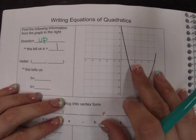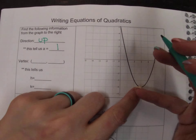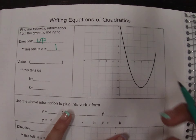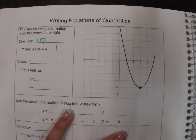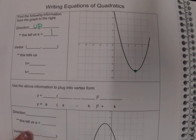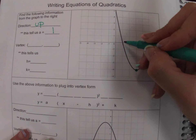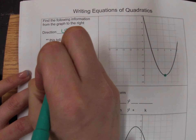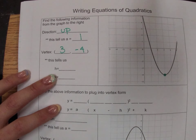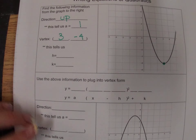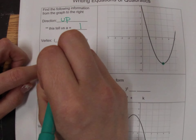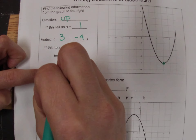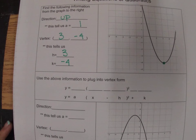We're going to find the vertex of this parabola. Remember, the vertex is the high point or the low point. In this parabola, it is a low point, and we're going to name this ordered pair: positive three, negative four. So our vertex is (3, -4). This tells us that our h value is three and our k value is negative four, because our vertex is always h comma k.